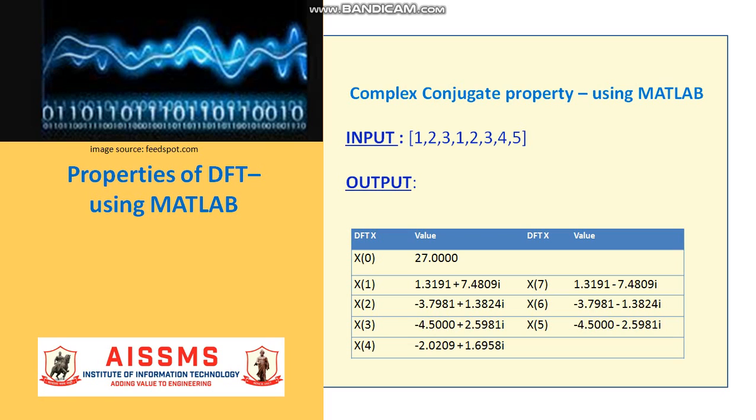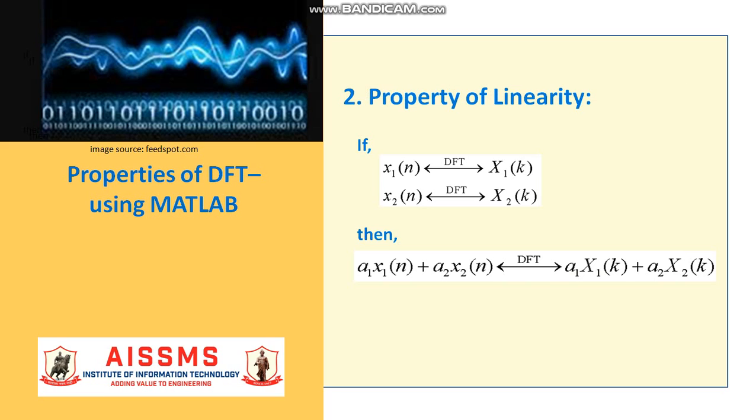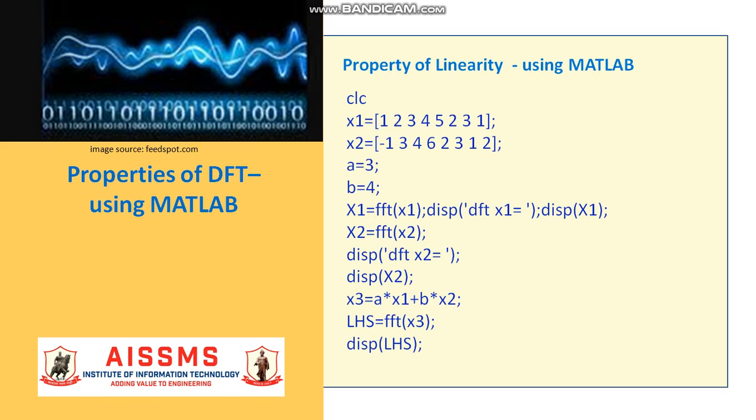The DFT output using the MATLAB program just discussed is as seen in the following table. The next property is linearity. If DFT of X1 of n is X1 of k and X2 of n is X2 of k, then linearity property of DFT states that A1 X1 of n plus A2 X2 of n gives A1 X1 of k plus A2 X2 of k where A1 and A2 are constants.